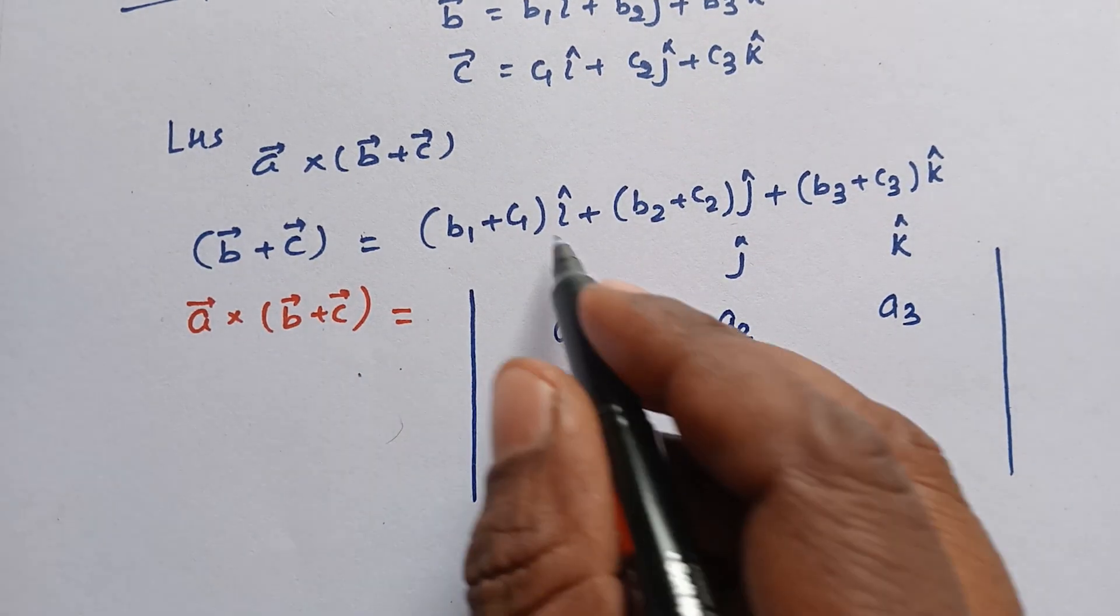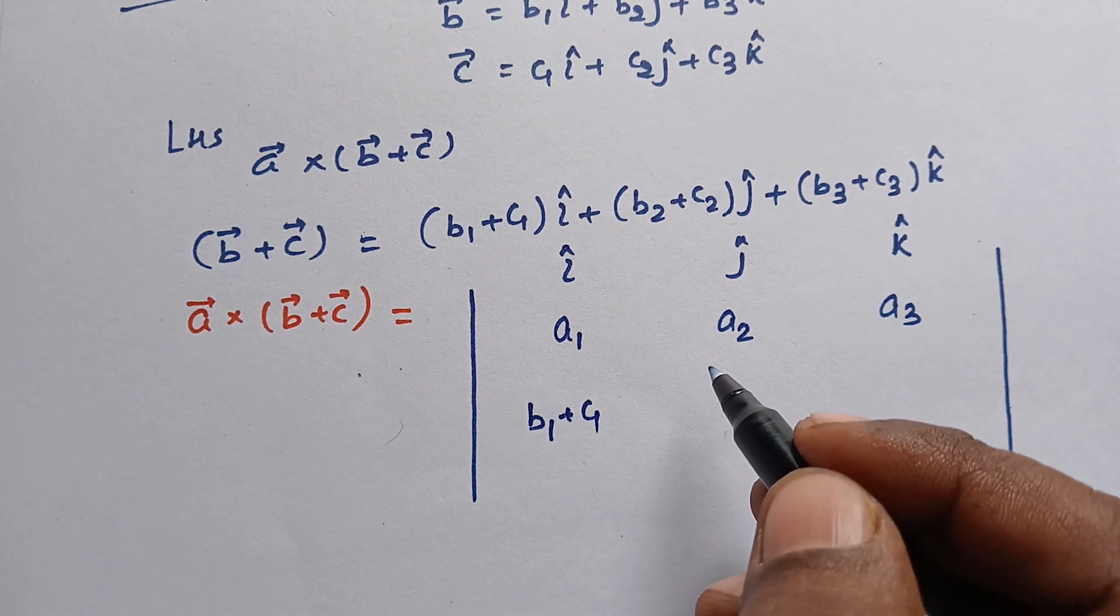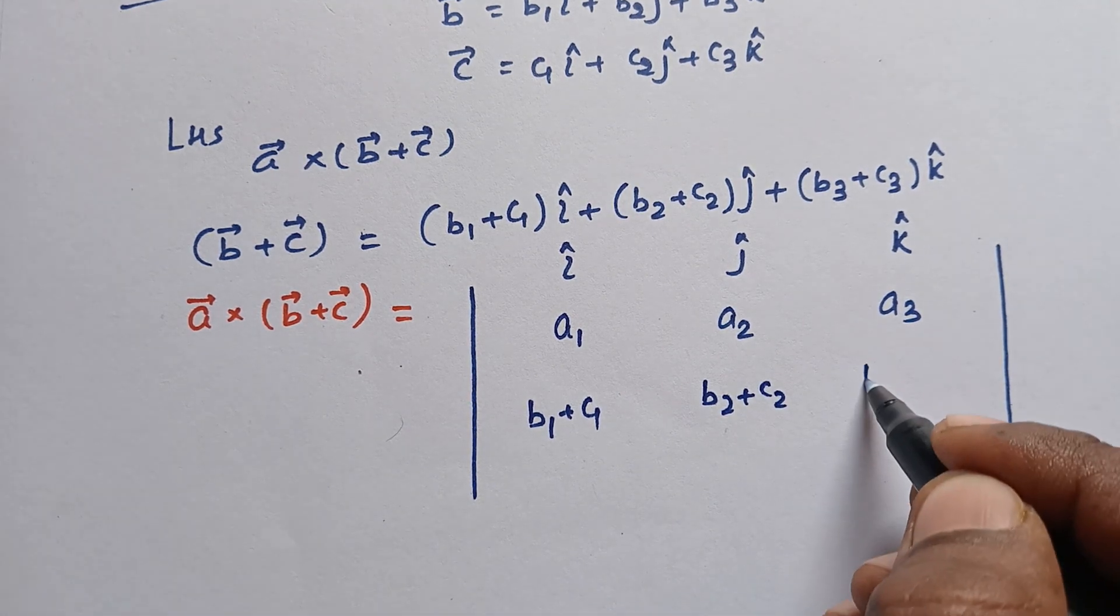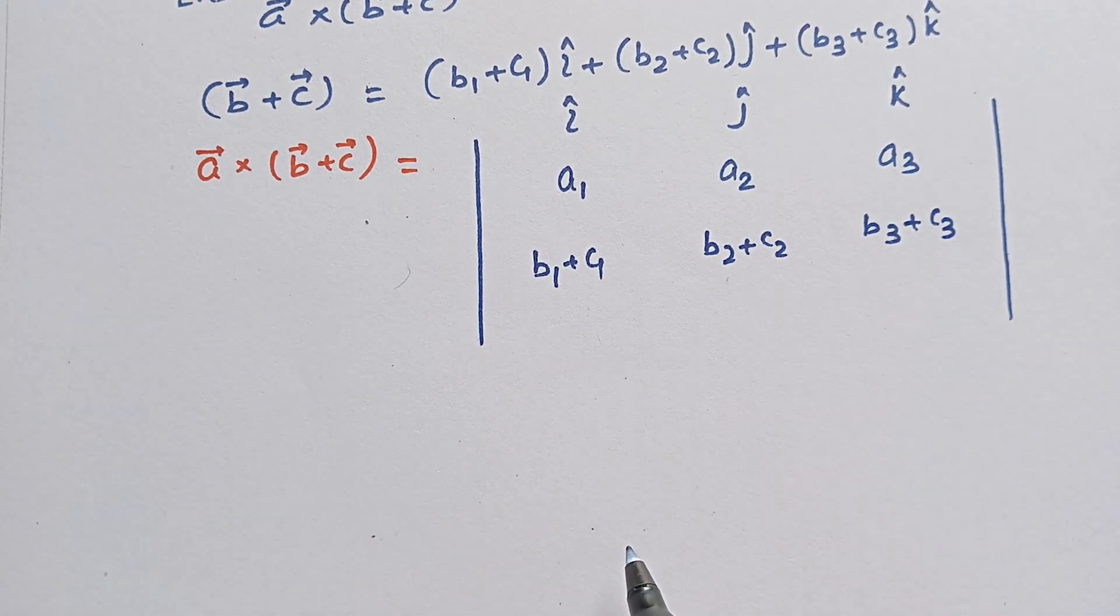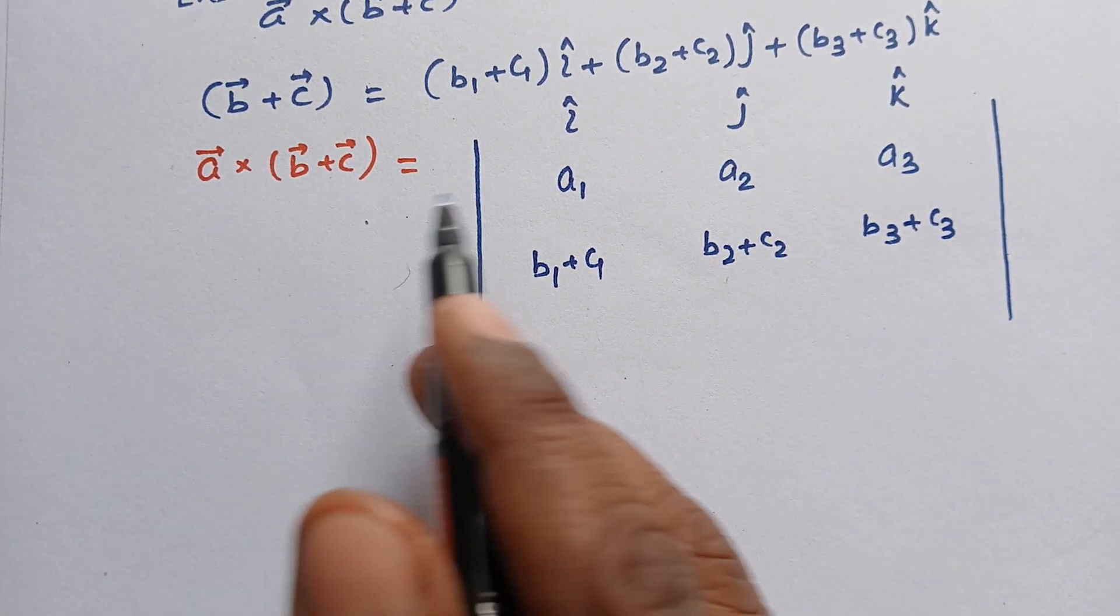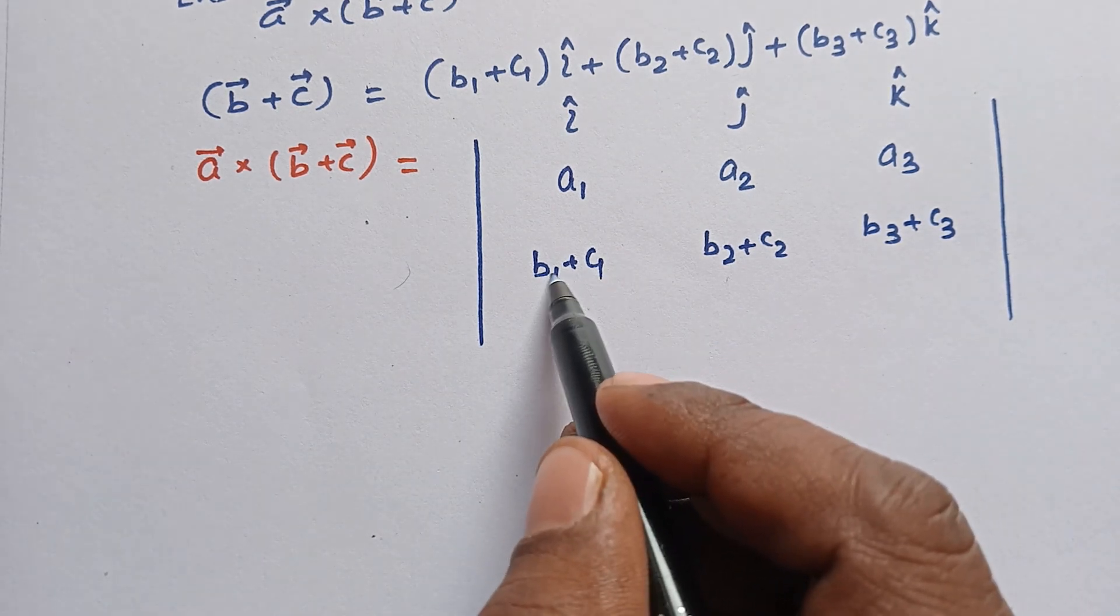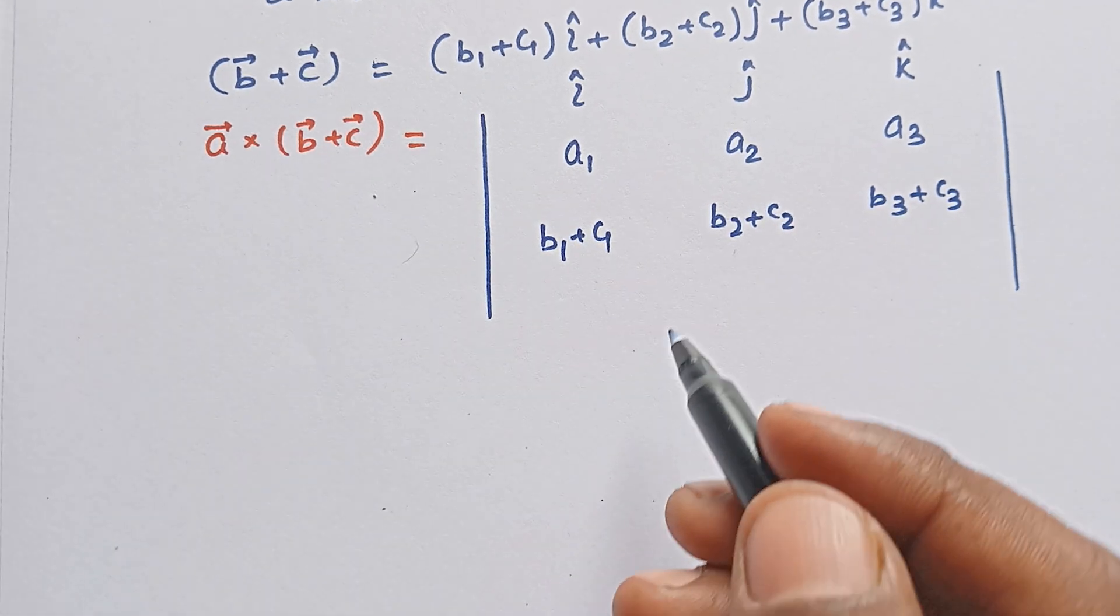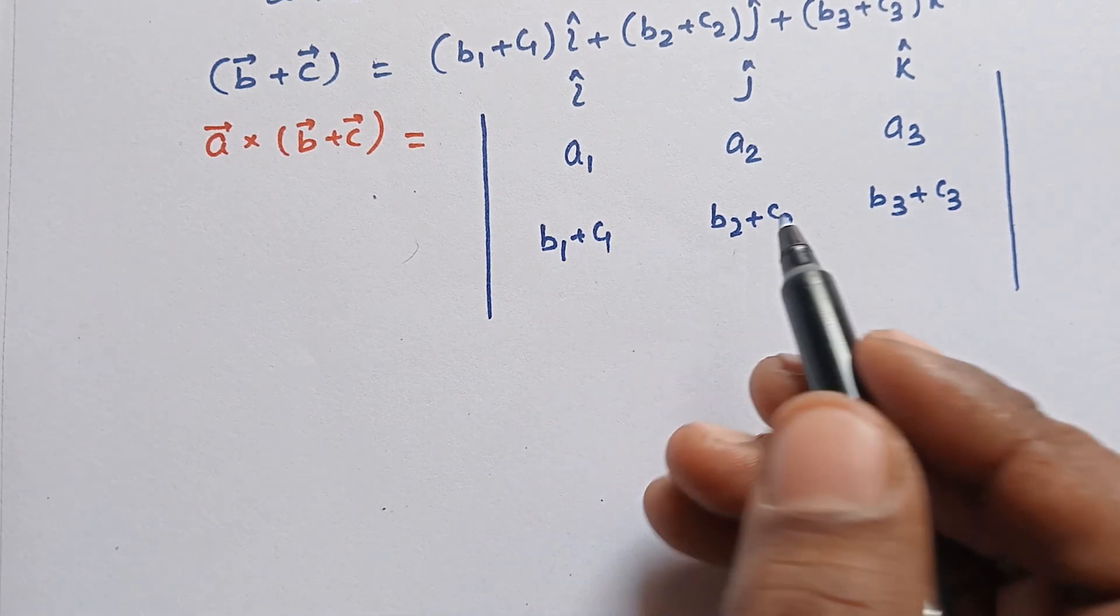And B plus C for us is b1 + c1, then b2 + c2, then b3 + c3. Now we will expand A×(B+C). When we read a determinant, we use a property. If there are two terms together, we can split it into two determinants. If there are three terms together, we can split it into three.